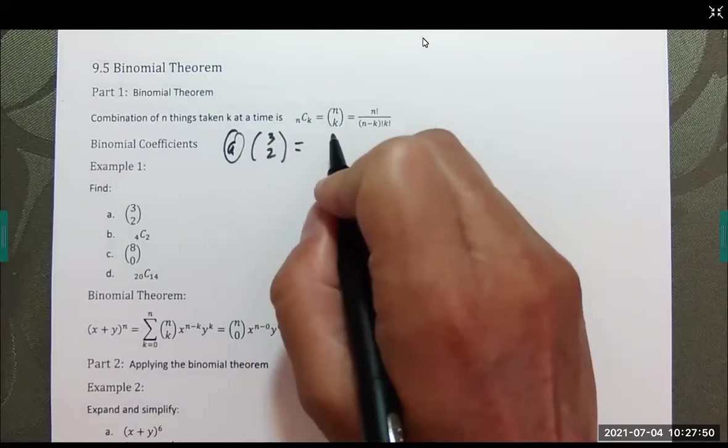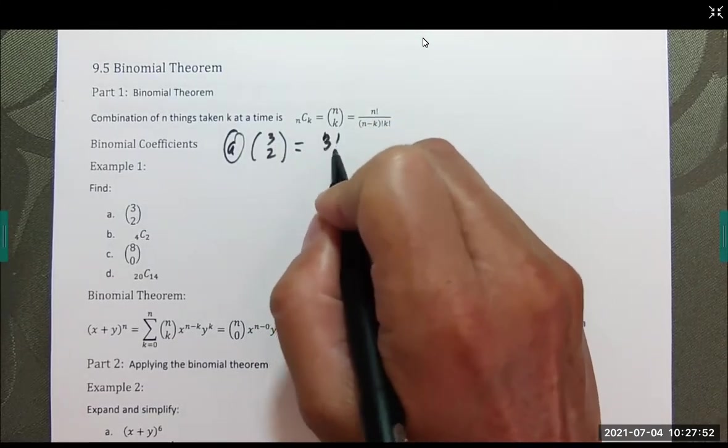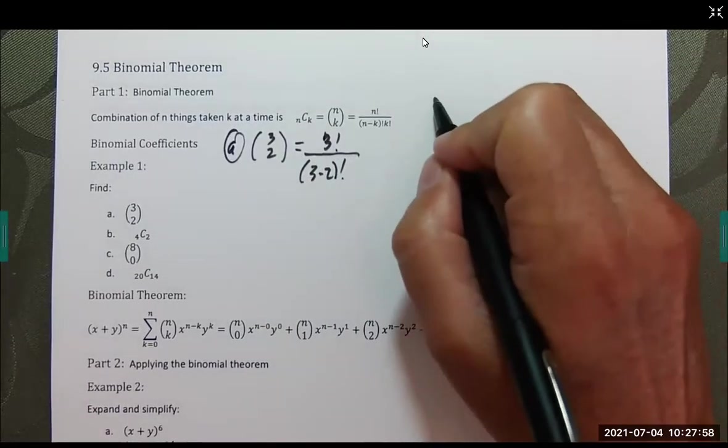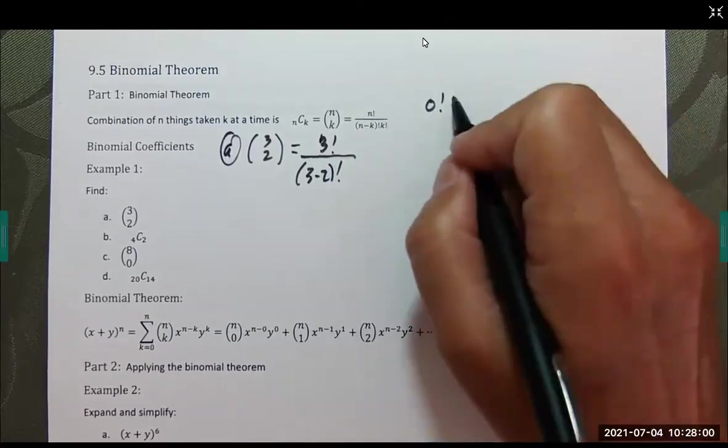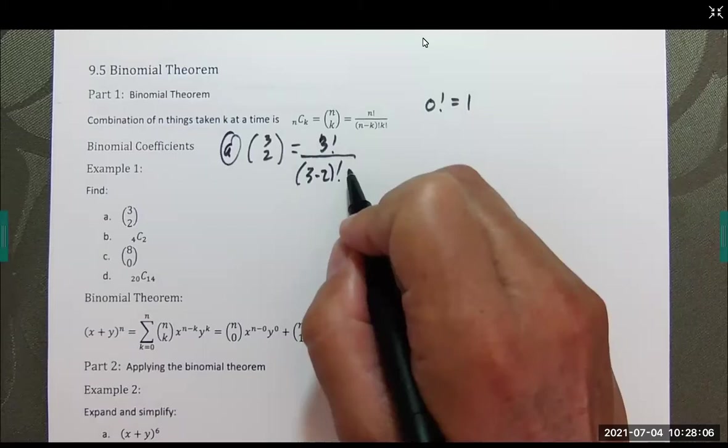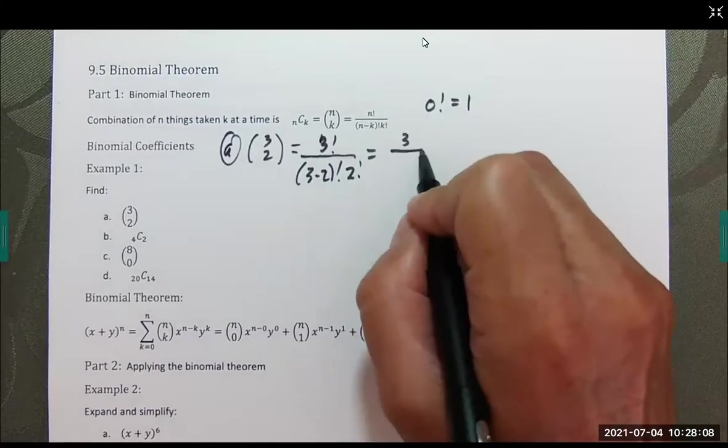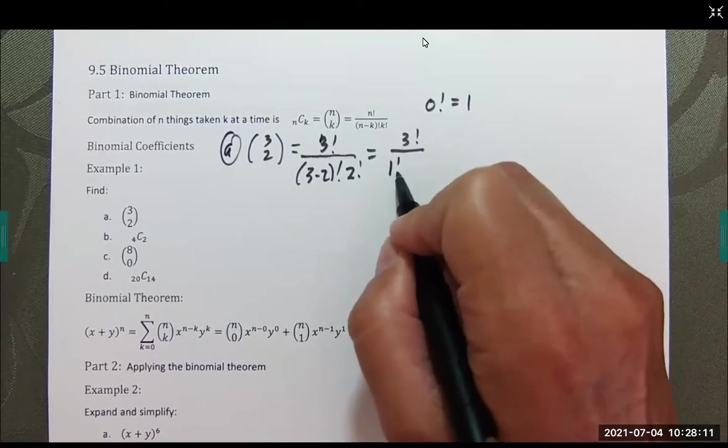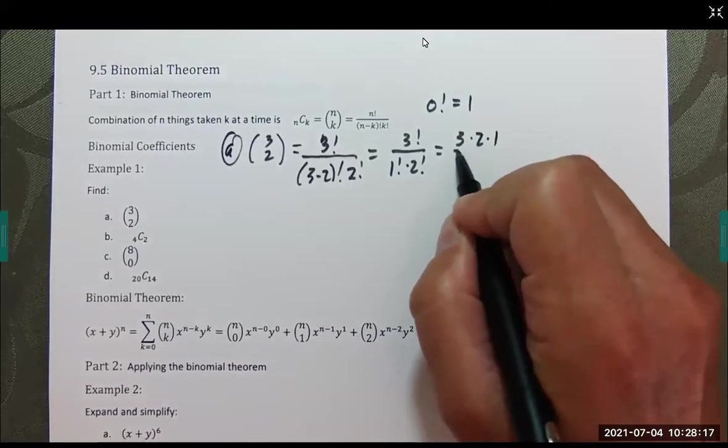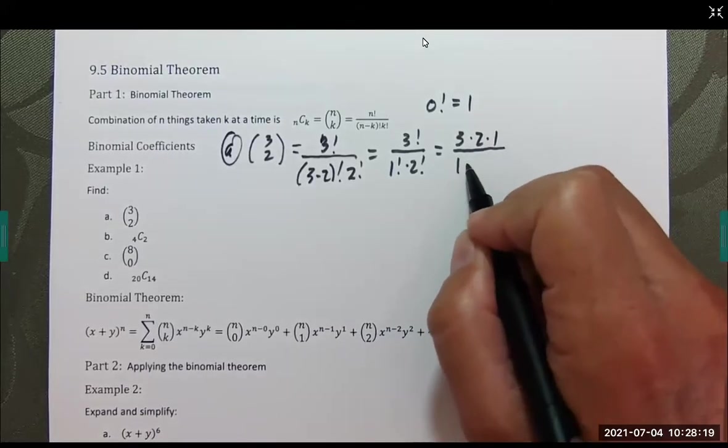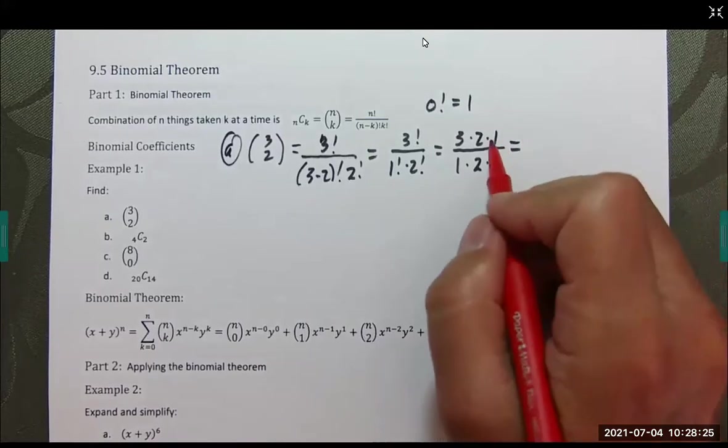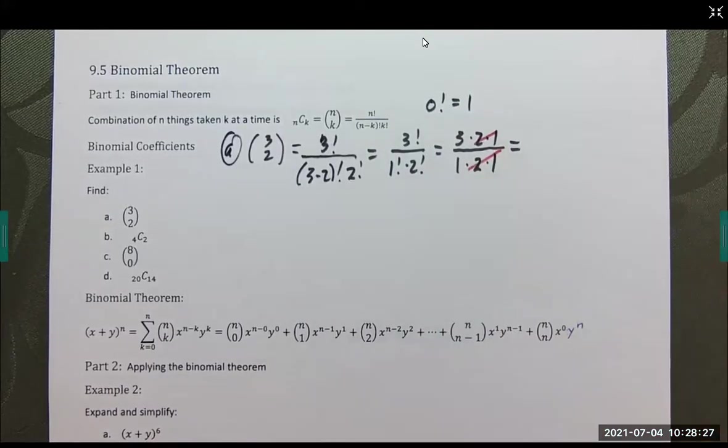And this is going to end, in this case is 3. So this is 3 factorial over (3 minus 2) factorial. And if you remember, we may not run into this, 0 factorial we define as 1, and then K factorial. And that's 2. So we have 3 factorial, 1 factorial times 2 factorial. 3 factorial is 3 times 2 times 1. 1 factorial is 1, 2 factorial is 2 times 1. And you can see very nicely, we end up with 3.